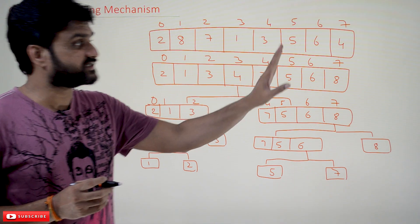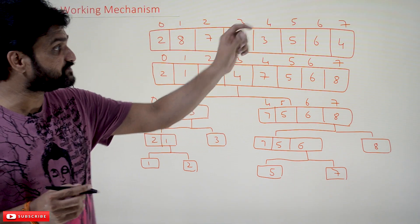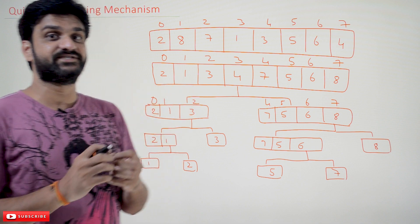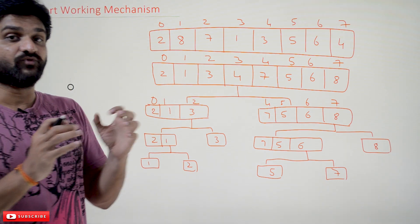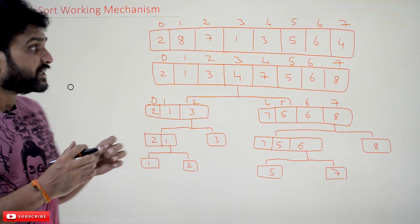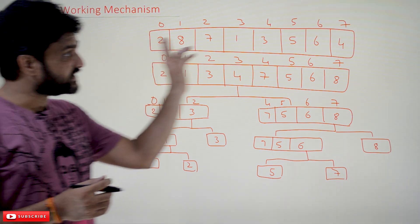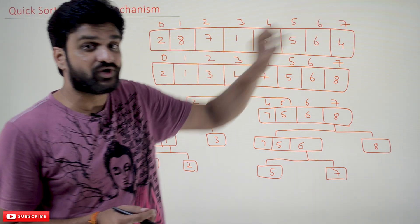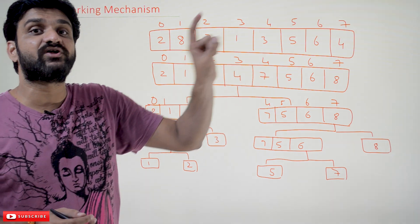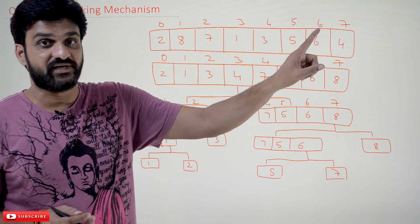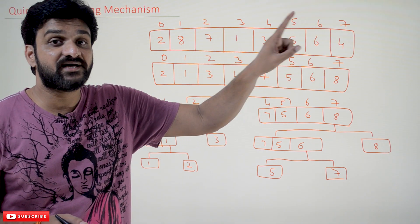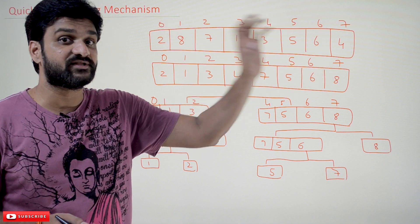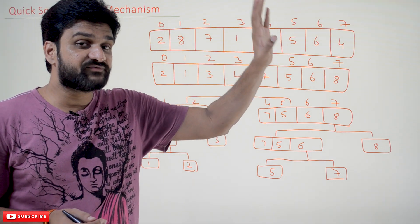The division in QuickSort is done based upon a function called partition. What partition means is: in this entire array, it is going to consider one of the elements as the pivot element. For example, consider this array — one element is identified as the pivot element.